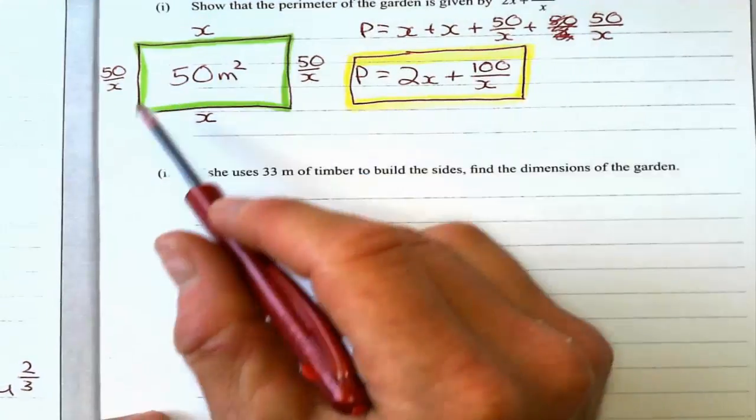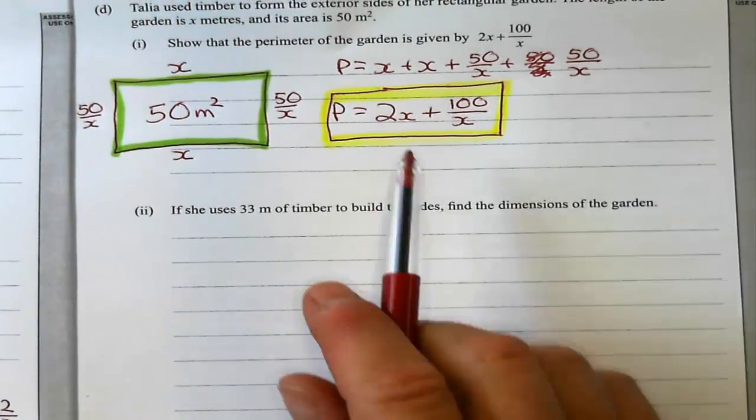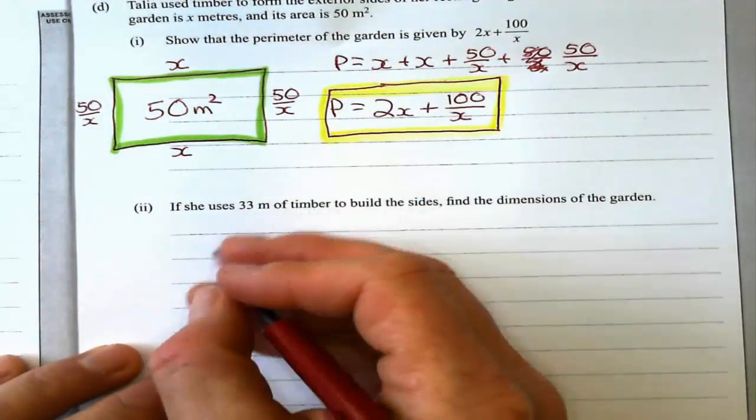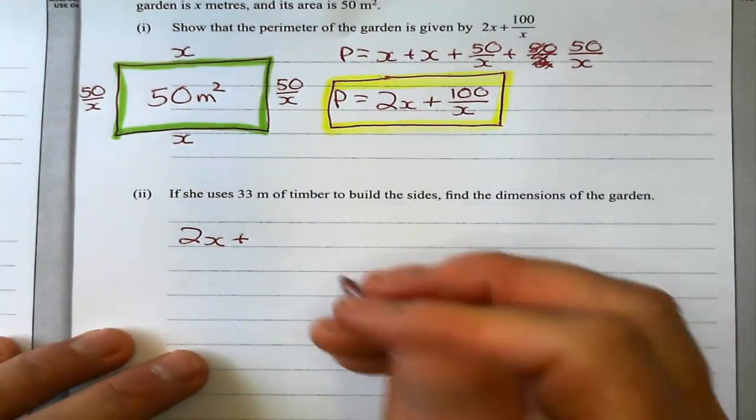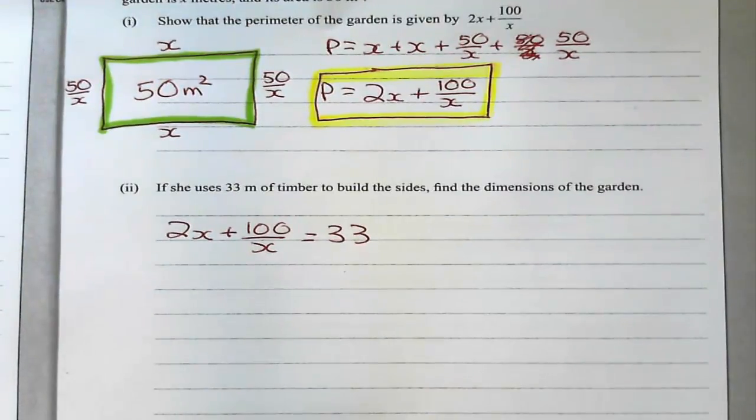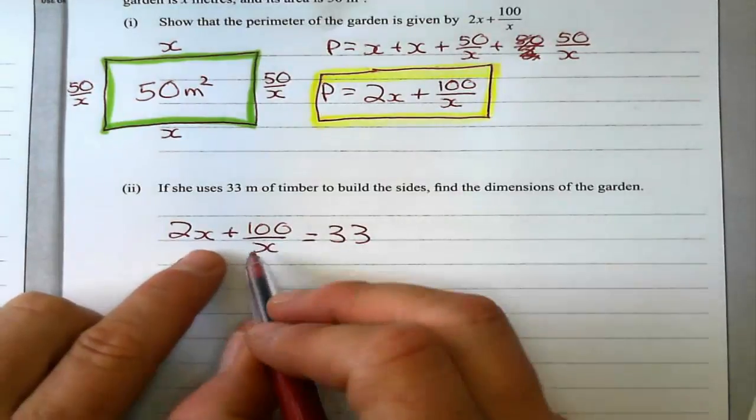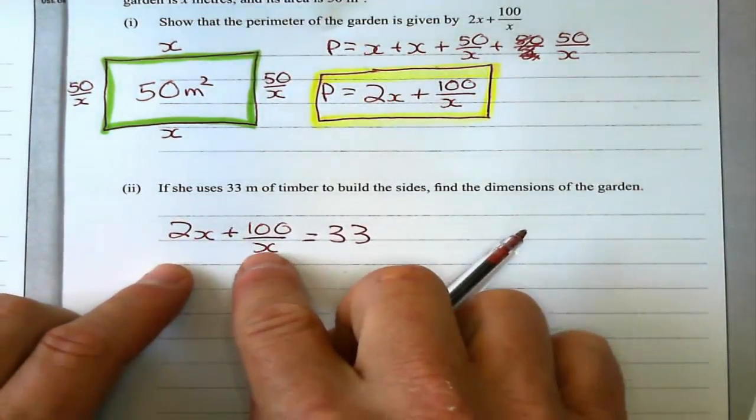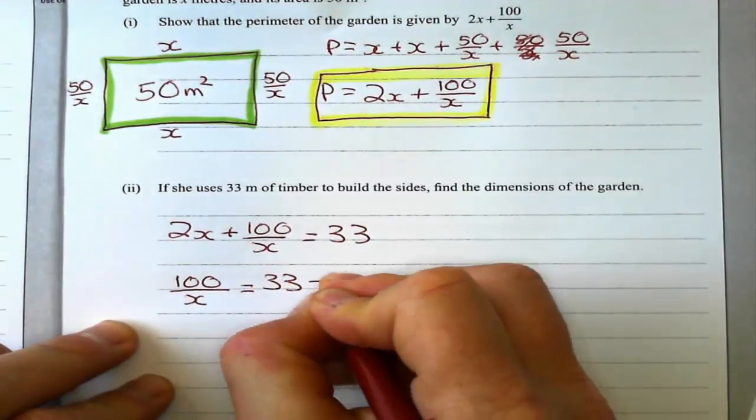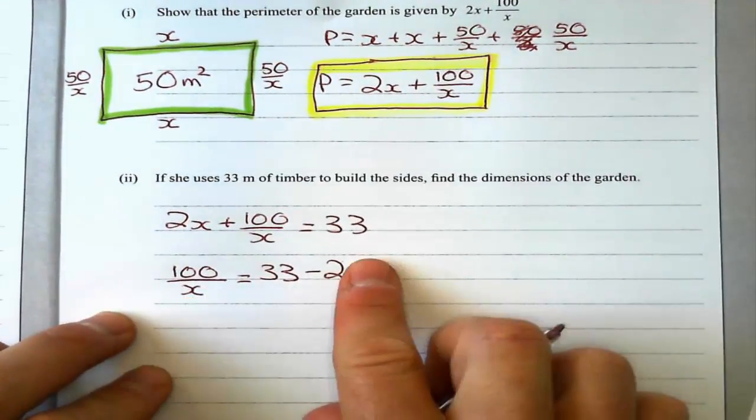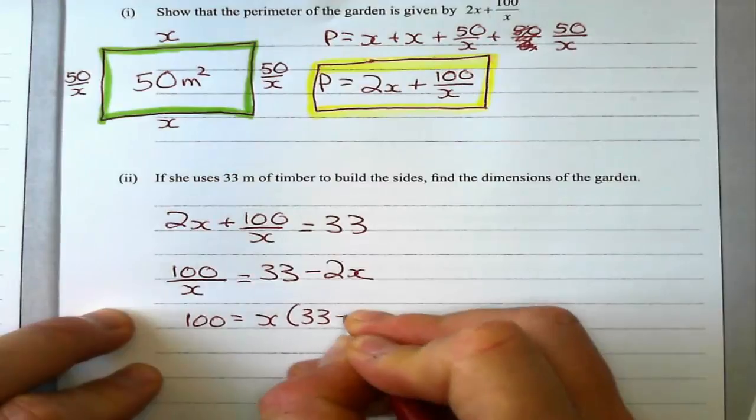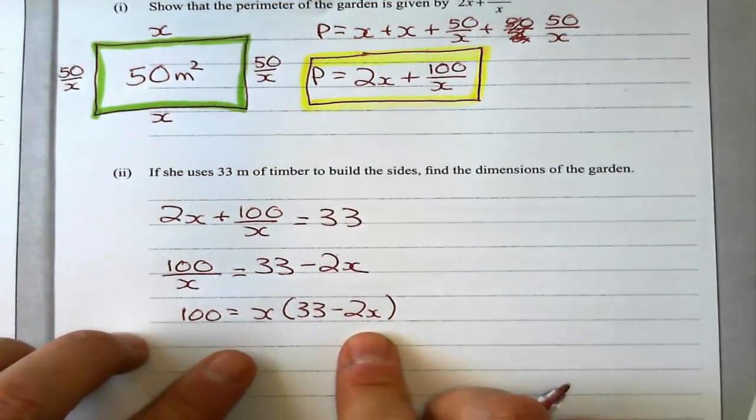Next one. If she uses 33 meters of timber to build the sides, find the dimensions of the garden. So what that means is that this expression of the perimeter must equal 33. That means 2x plus 100 over x gives me my perimeter, which is 33. At this point, I'm just going to take that 2x and put it to the other side so I can get rid of that x on the bottom. I don't want x's on the bottom here. So I'll say 100 over x equals 33 minus 2x. Now I'll just multiply that whole side by x to get rid of that denominator. So that's 100 equals x times (33 minus 2x).